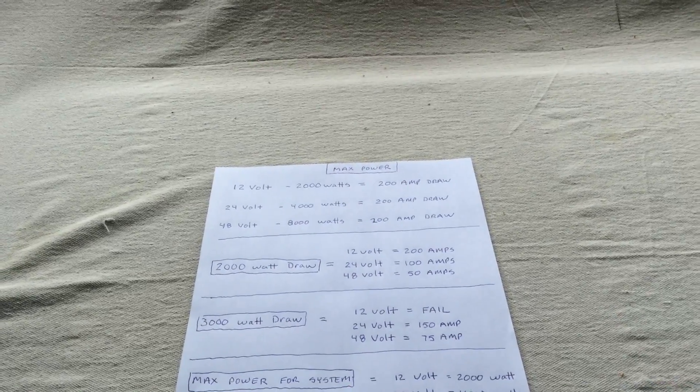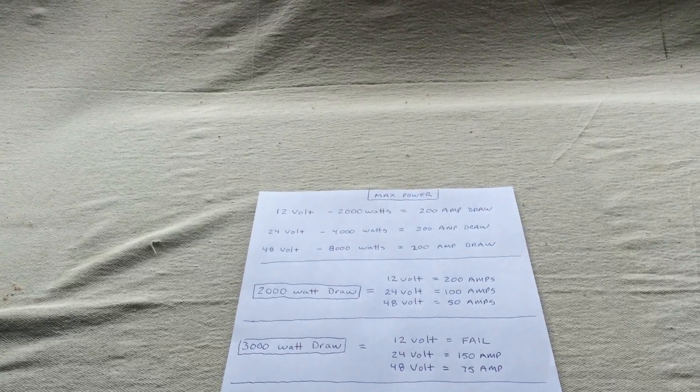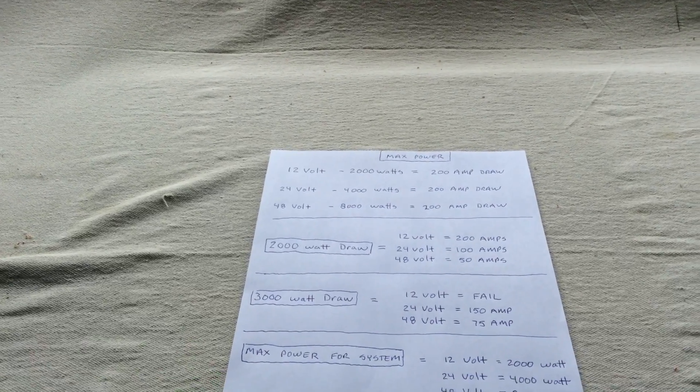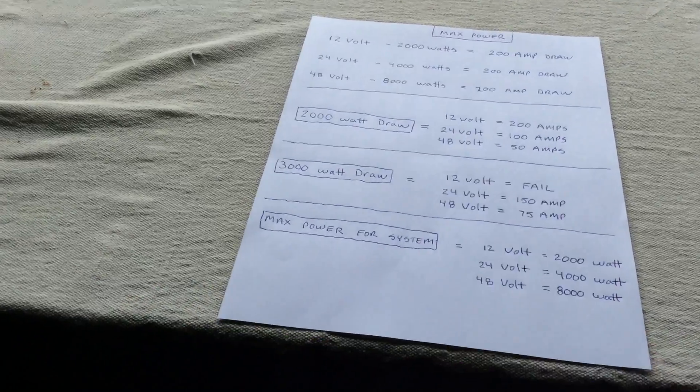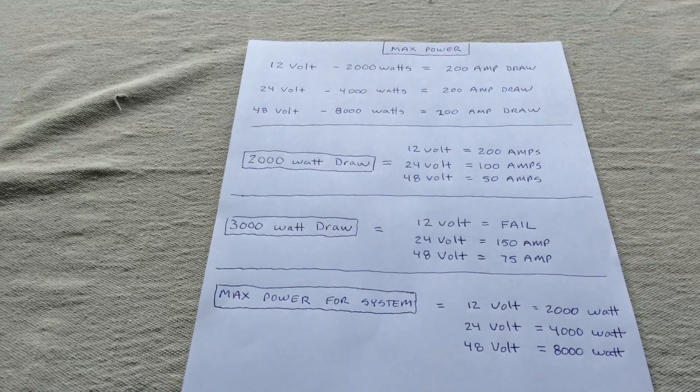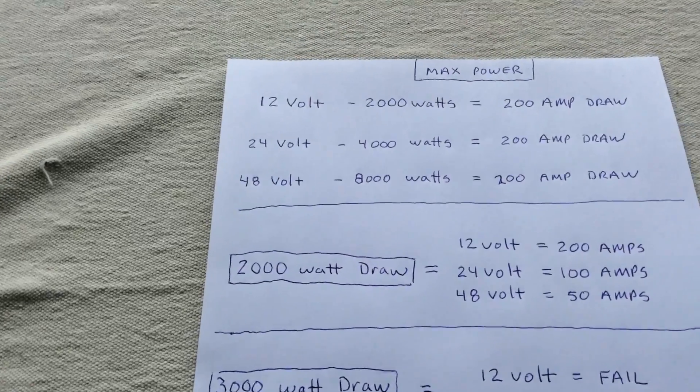A 12 volt is considered a small system. 24 volt would be a medium system. And a 48 volt would be for your large system. What does that mean? If you have a 12 volt system, let's take a quick look here.